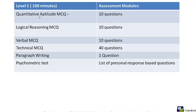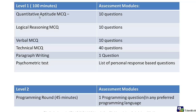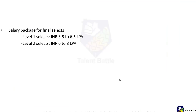L&T Infotech provides two job roles — Level 1 and Level 2. There is an additional round for Level 2, which is a programming round where one coding question is provided and you can use any programming language. The salary package depends on the college. For Level 1 it ranges from approximately 3.5 to 6.5 lakhs, and for Level 2 it ranges from 6 to 8 lakhs per annum.